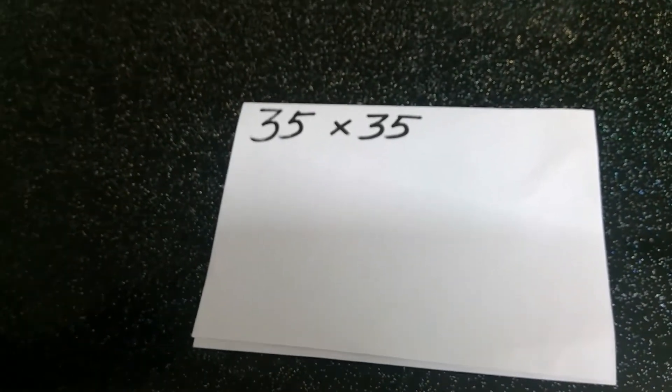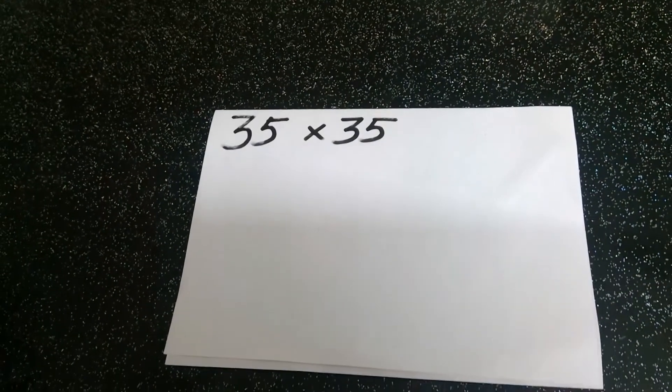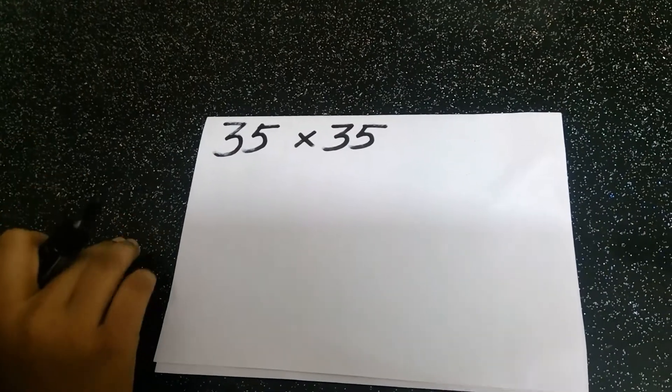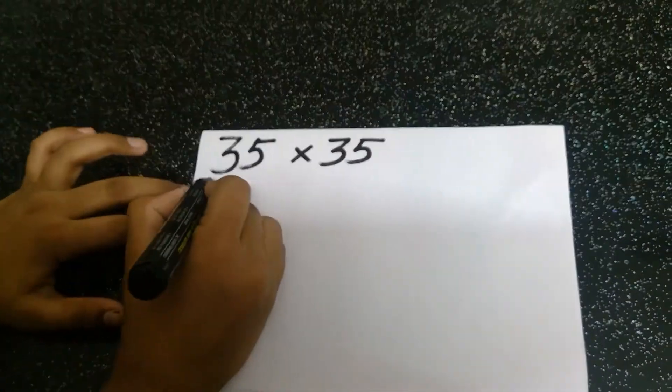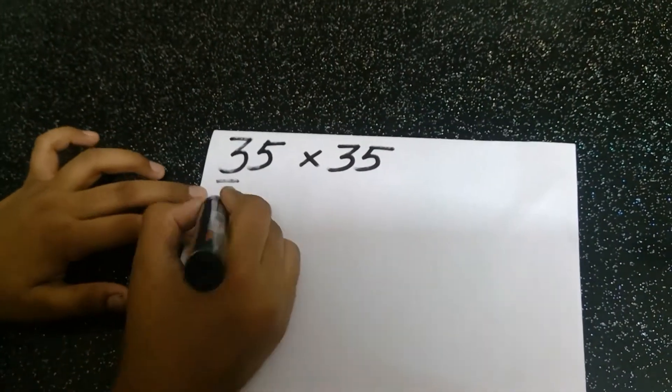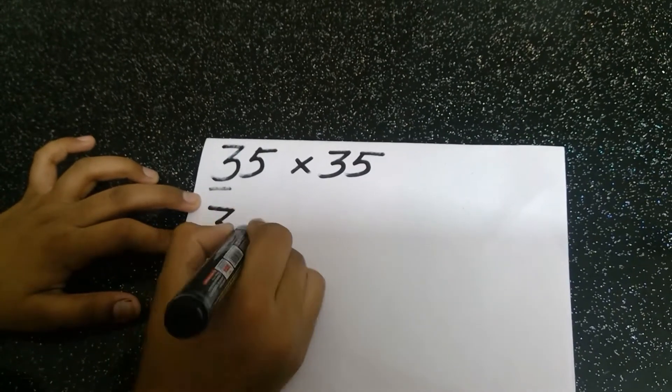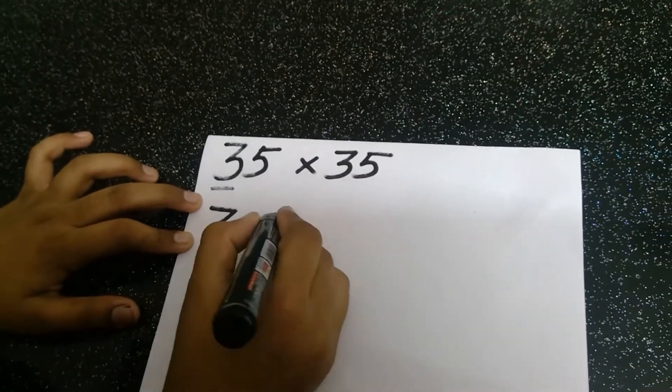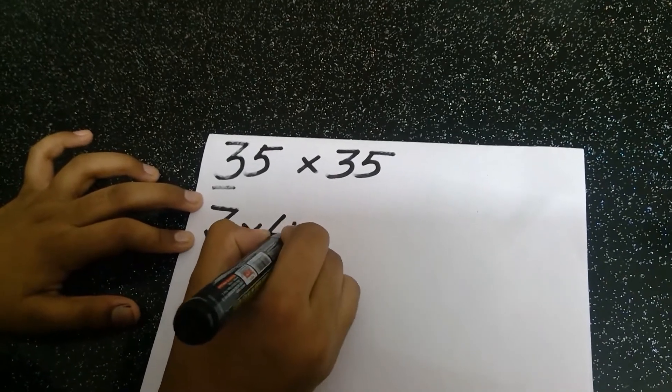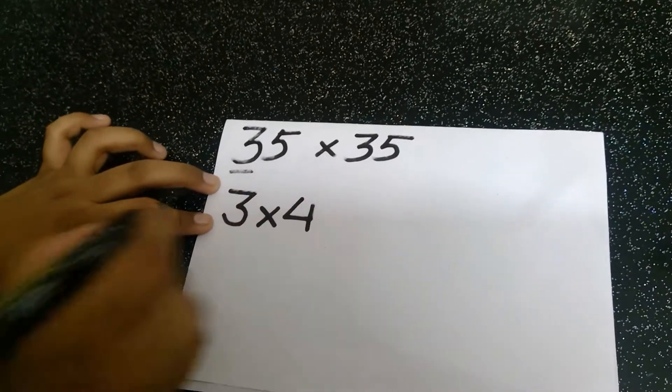So our next question is here. Our question is 35 into 35. First we are going to multiply 3 with the next number 4. So 3 into 4 equals 12.